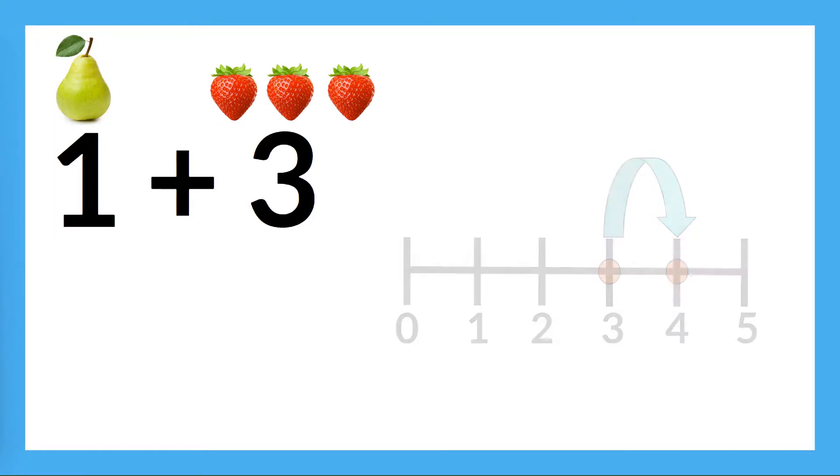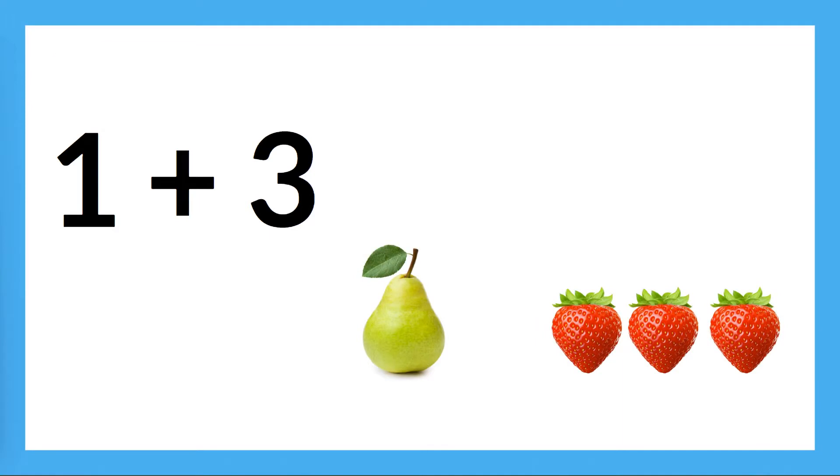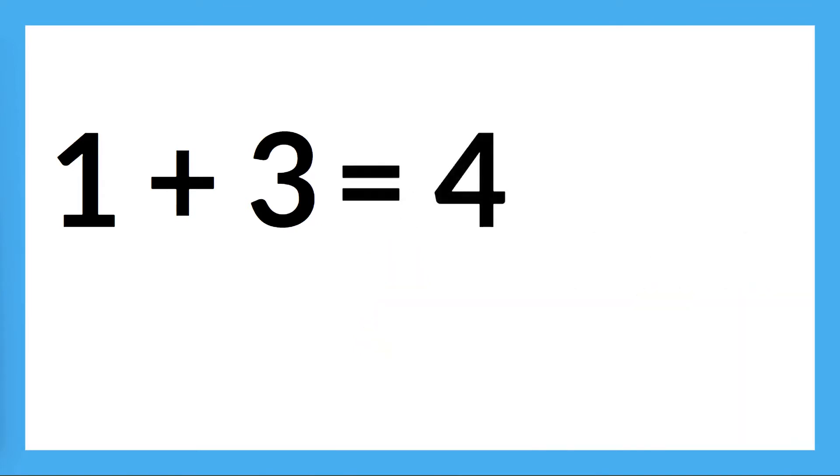That means that one plus three should equal four, right? Let's double check by counting up all the parts too. Here are our three strawberries and our one pear. Let's count up everything here. One, two, three, four. We found the same answer. We can also find this answer by holding up three fingers, then adding one more, or even by using counters to build both parts. No matter how we solve it, we'll find that one plus three equals four. Using different strategies can help you check your work and make sure your answer is correct.